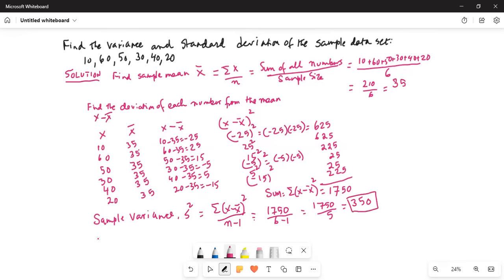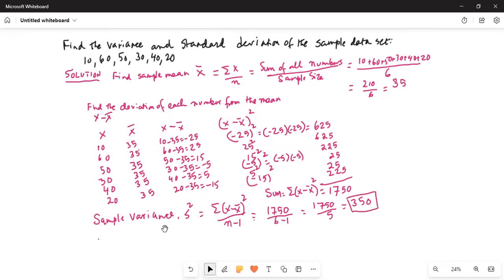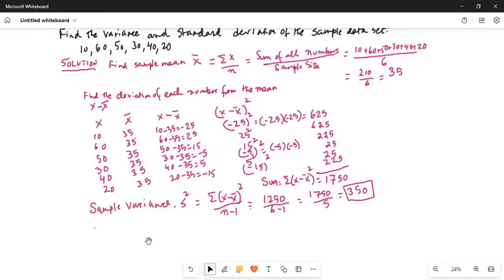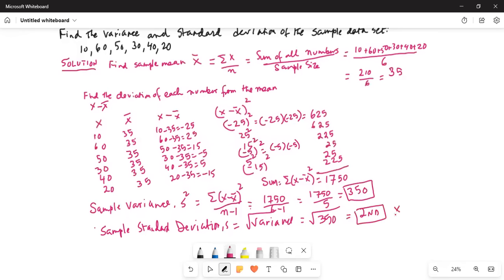Now, standard deviation. So the standard deviation, sample standard deviation s is square root of variance. So it is square root of 350. How do I get the square root? I press the second button, then I press the x squared button, which will get the square root. Inside the square root, I hit 350 and enter.